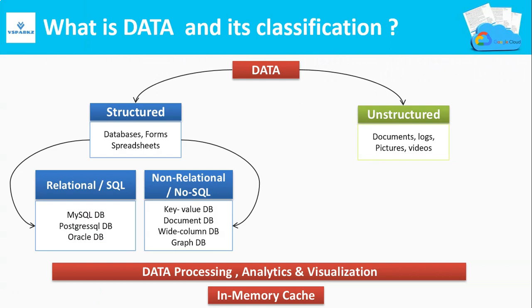What is data? Data is nothing but a piece of information. A data can be anything — a video file is data, a server log file is data, a traditional database is also data. Whatever gives information about something either directly or indirectly is called data.